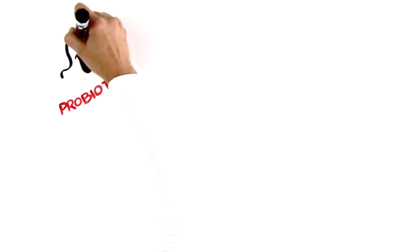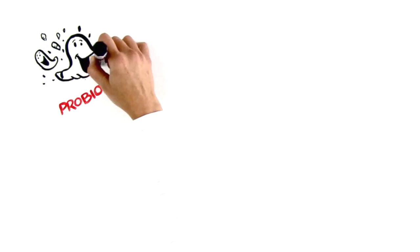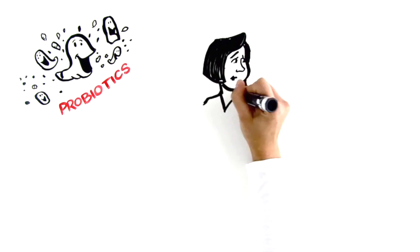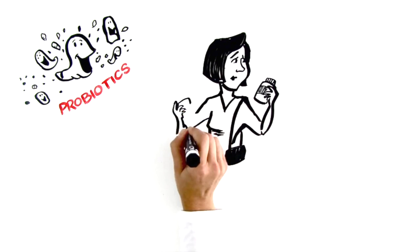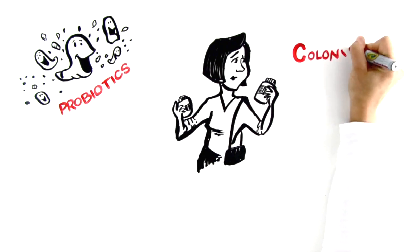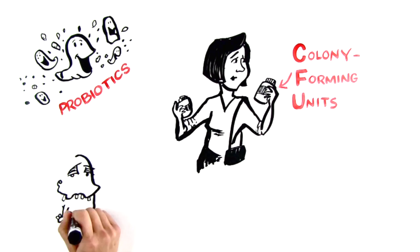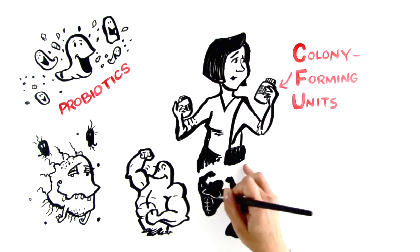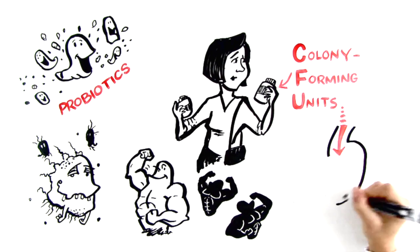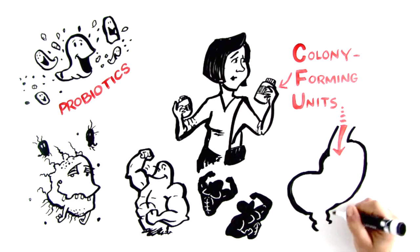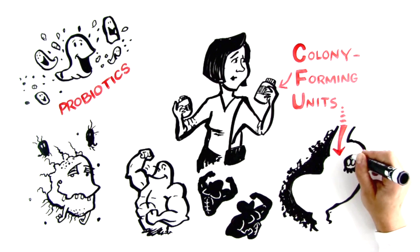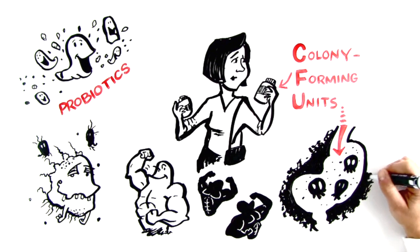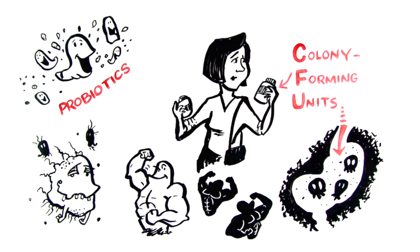So Katie decided to try probiotics to counter the effects of the antibiotics. There were so many varieties on the shelf, she wasn't sure which one to choose, so she decided to go with a brand touting the highest CFU count. But what Katie didn't know was that not all CFUs are created equal, and the probiotics she chose used bacteria strains that, once swallowed, were unlikely to even make it through her stomach into the intestine where their benefits are felt. So her symptoms didn't get any better.